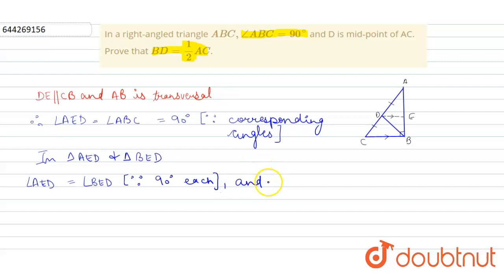And we can say, DE is equal to DE because common. Therefore, triangle AED is congruent to triangle BED by SAS side angle side. We have proved this property with the help of side angle side.